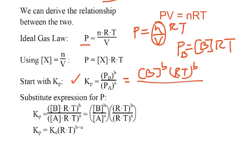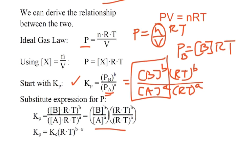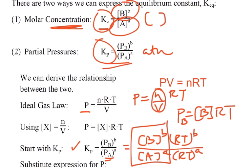And we do the same thing for the partial pressure of A, then the partial pressure of A is the concentration of A raised to the A power times R times T raised to the A power. So when we get done, we get this expression, and we can see that this portion of it is really our Kc. That's the concentration of B raised to the B power over the concentration of A raised to the A power. So that section right there is just the Kc.